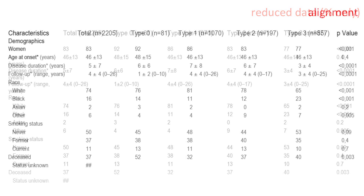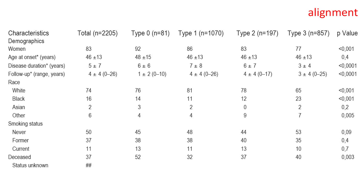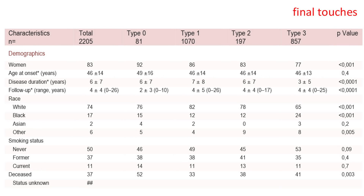The next step is alignment. I've aligned all the numbers right, and in the cells where there are multiple entries — such as age at onset where a standard deviation is also included — I've added additional tabs in the cell to align those numbers as well. Only the p-values have a decimal value, so they're aligned on the decimal point. For the final touches, I added some very light bands to guide the eye across the long rows and changed the color of the subheading letters to make them stand out a little bit more.